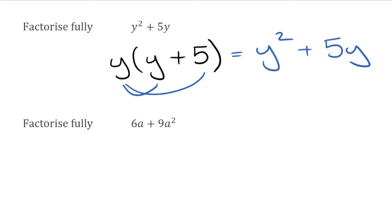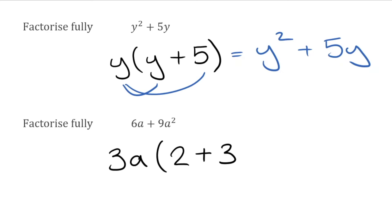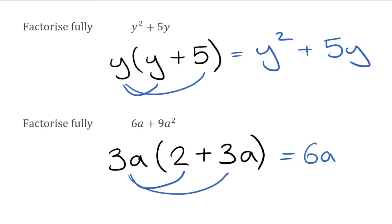For the next one, looking at the number parts, the highest common factor of 6 and 9 is 3. I have an a on the left and a squared on the right — dealing with the base of a, and we always take the lowest power, so we take that a on the outside. Inside the bracket: we need 6a, which is 3a multiplied by 2, then plus. We need 9a squared, which would be 3a multiplied by 3a — multiplying the 3 by another 3 to make 9, and the a by another a. Checking by expanding: 3a times 2 gives 6a, and 3a times 3a gives 9a squared.